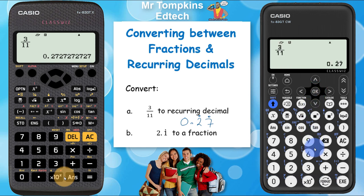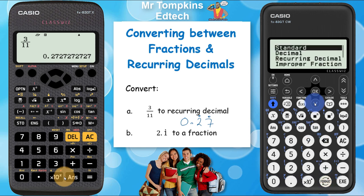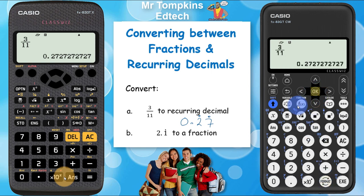You can see it's written as 0.27 with a dot on the two and a dot on the seven. If you want it in expanded form, press the format key and select decimal instead, and it will show the full expanded version of the number.